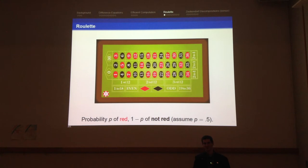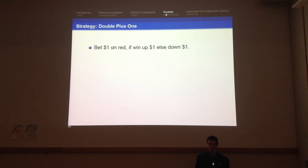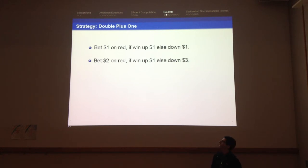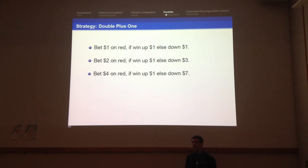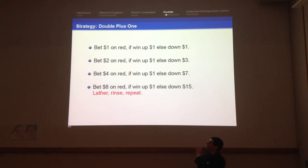Here is the double-plus-one strategy, one of the most popular strategies people bring to Vegas. Bet one dollar on red — if it wins, you're up a dollar; if not, you're down a dollar. Then bet two dollars — if you win, you've netted a dollar; if not, you're down three. Then bet four — win and you net a dollar, lose and you're down seven. Then eight, and so on. Every time you double your bet, eventually red comes up and you win a dollar, then lather, rinse, repeat.